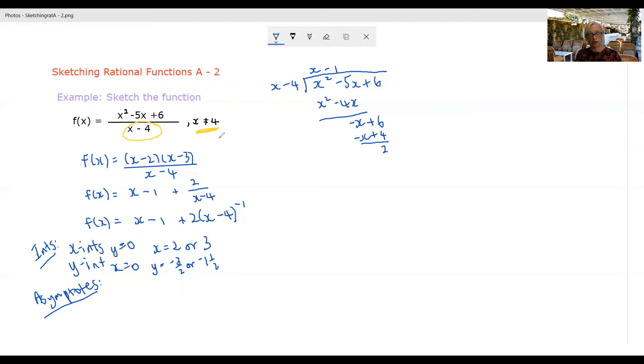That doesn't necessarily mean we have an asymptote at x equals four, but it makes it a potential asymptote. We need another couple of things to happen. So let's just think about those for a minute.